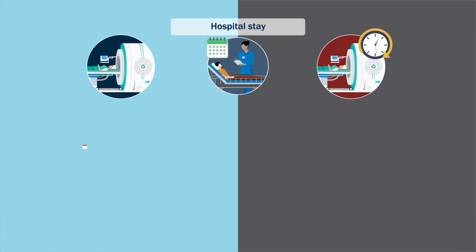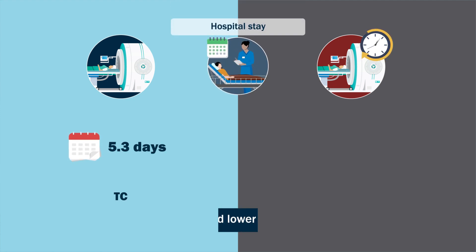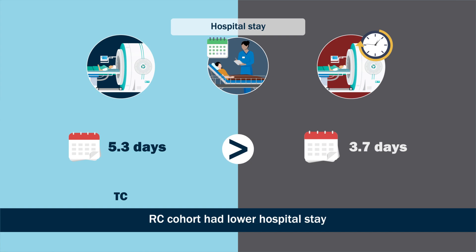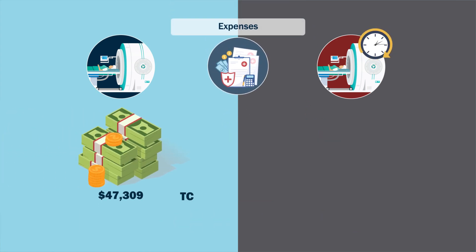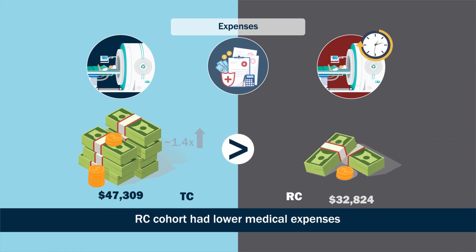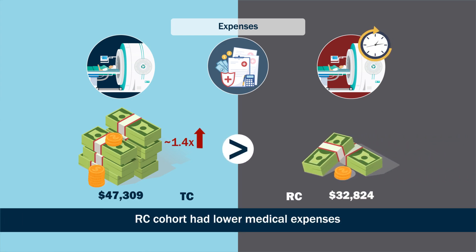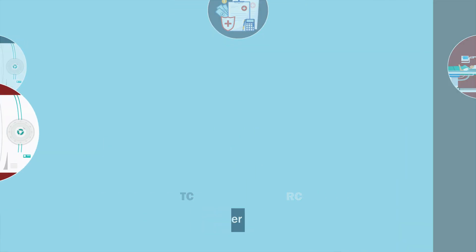Additionally, the hospital stay was 5.3 days for the TC and 3.7 days for the RC, which was associated with a cost of $47,309 and $32,824, respectively.